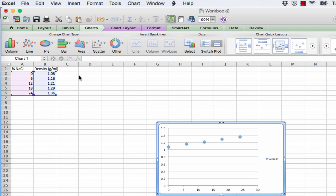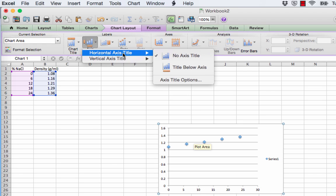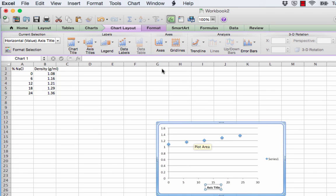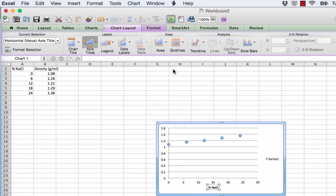The graph appears in its most simplest form, but we want to have a fully labeled nice graph. And so by choosing Chart Layout, we can add a title and axis titles to our graph. So I'm going to first add my horizontal axis title and that's going to be my percent sodium chloride and there we have a title. I'll then add a vertical axis title and that will be density in grams per milliliter.